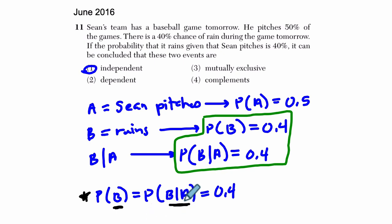In other words, Sean pitching, knowing that fact has happened first, had no impact on whether or not it will rain, which makes sense, right? Independent events means two events whose probabilities don't alter each other directly. They have no impact on each other.